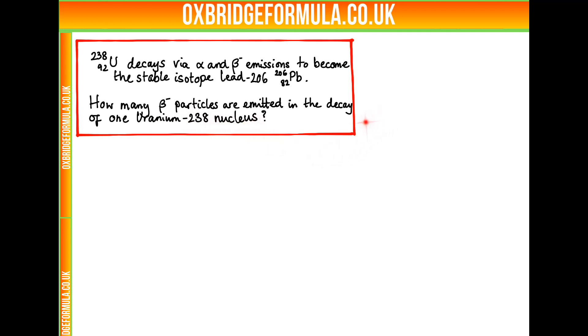Immediately when we do these questions with alpha and beta decay, we should note that alpha is very useful in constraining the numbers. Alpha changes the atomic mass or atomic number, the number of nucleons. So from 238 to 206, only alpha must have changed this.